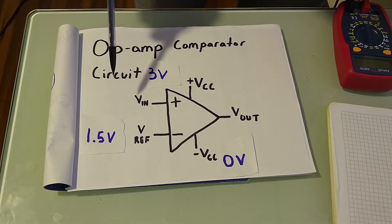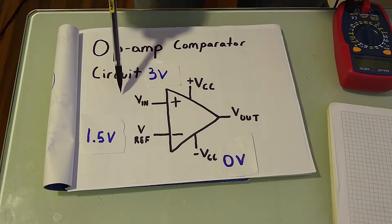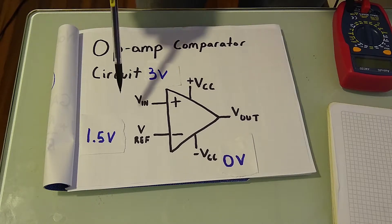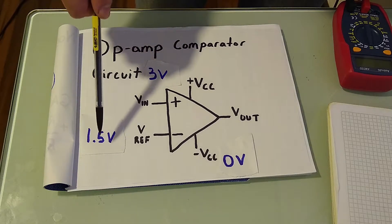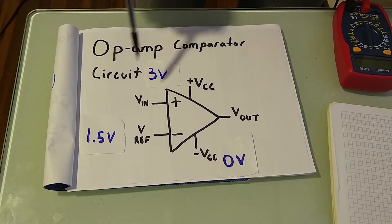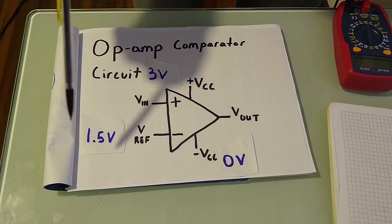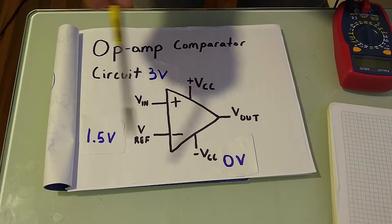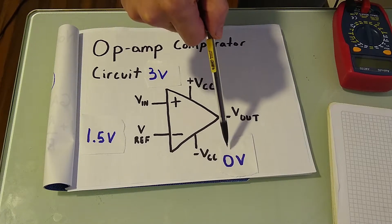So say we have an input of 2.5 volts in. Our output will be 3 volts because 2.5 volts is greater than 1.5 volts. Or if we have an input of 1 volt, because it's less than 1.5 volts, the comparator will output 0 volts.